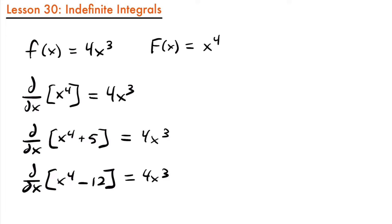What we find is that there is an infinite number of functions that will have this derivative. We could add any constant — whether it be 100, a million, or 150,562 — to x to the fourth power and still have the derivative 4x cubed. So when writing the antiderivative, we represent that constant with plus C. This gives us x to the fourth power plus C as the antiderivative of 4x cubed.